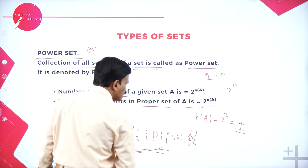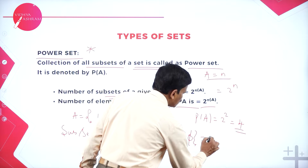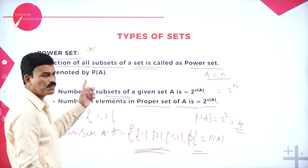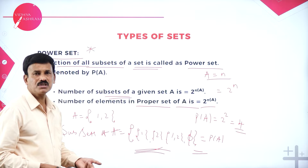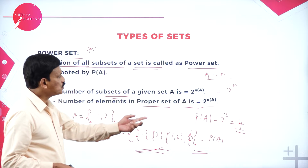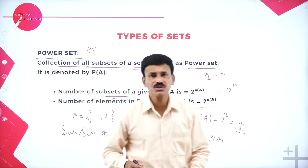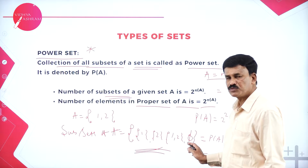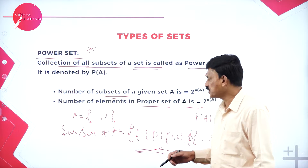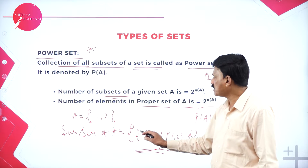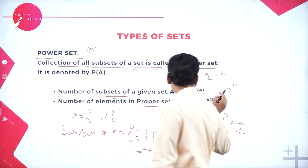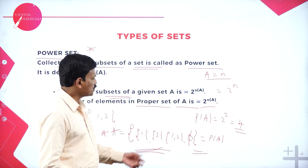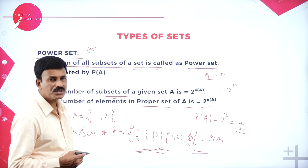So this collection of all subsets is called the power set, P(A). The set A contains 2 elements, so 2 squared equals 4. Therefore P(A) has 4 elements. This is a small example for a power set.